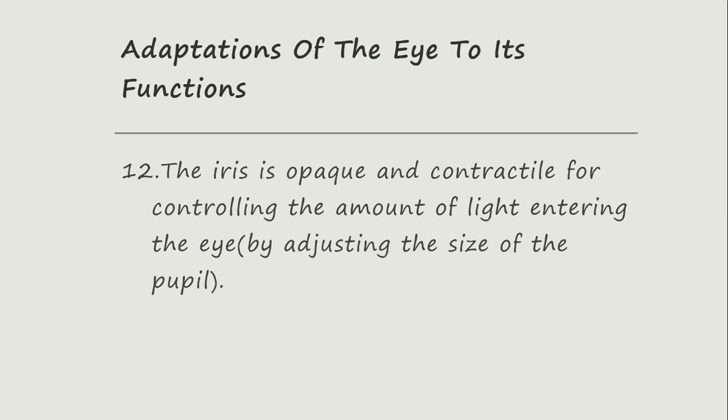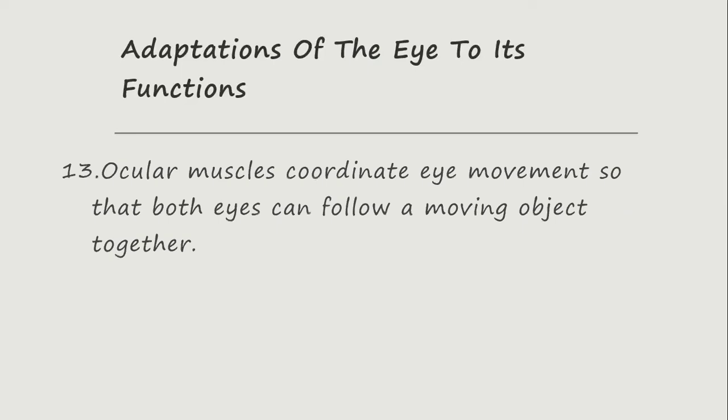The iris is opaque and contractile for controlling the amount of light entering the eye by adjusting the size of the pupil. The extraocular muscles connect the eye movement so that both eyes can follow moving objects together.